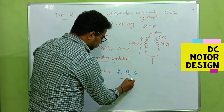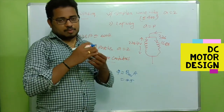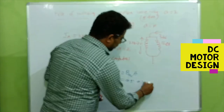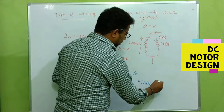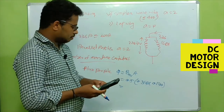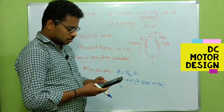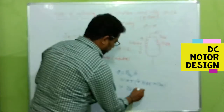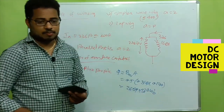The flux is nothing but B_average multiplied by area A. The B_average we already took as 0.5, and A is the pole pitch multiplied by the length of the armature. The pole pitch we already calculated as 0.314 m and the armature length is 0.170 m. So flux = 0.314 × 0.170.